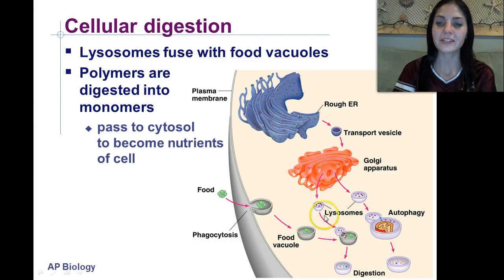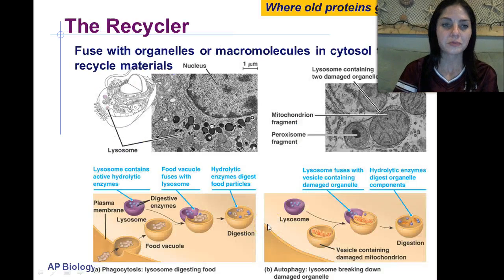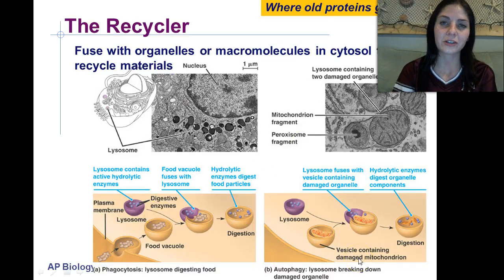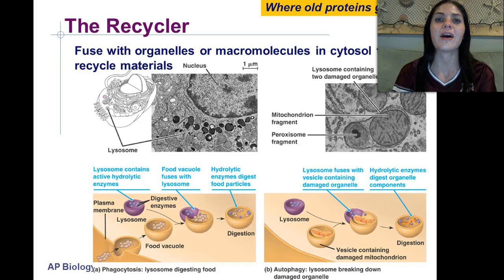These lysosomes fuse to those food vacuoles and break down those polymers into monomers — nutrients that the cell can then process and use. They're also called the cell recycler, as they recycle dead or dying parts of organelles within the cell. These are where old proteins go to die.